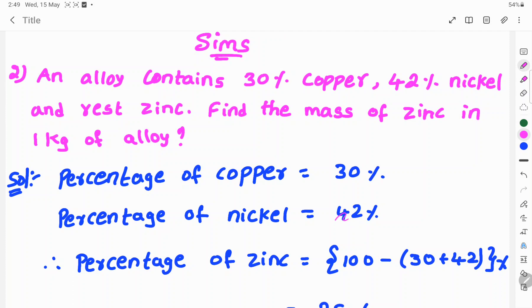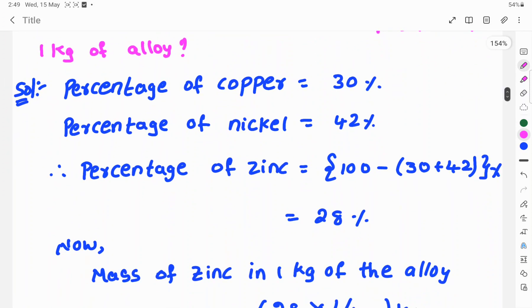Therefore, the percentage of zinc is equal to 100 minus (30 plus 42)%. So, 30 plus 42% is 72%. So, 100 minus 72% is 28%. Percentage of zinc is 28%.